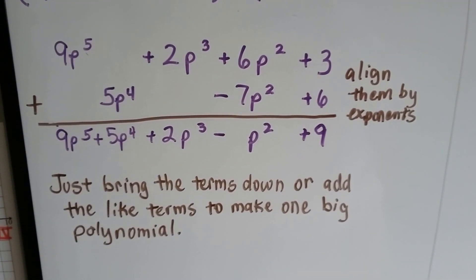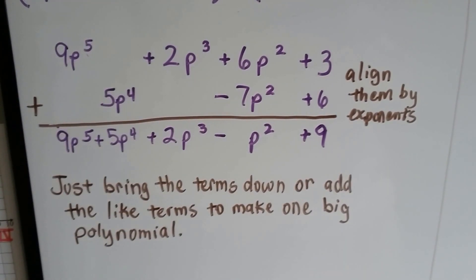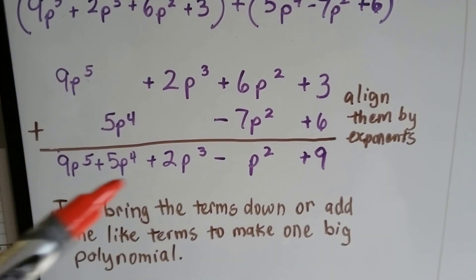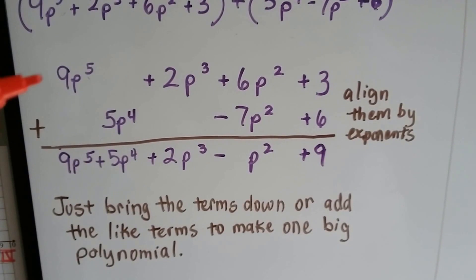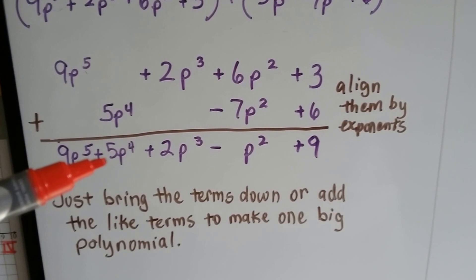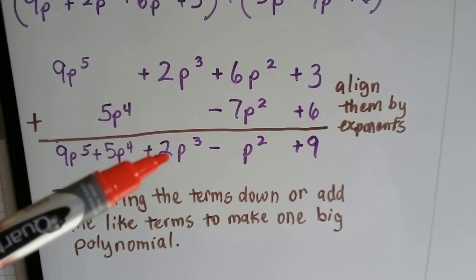Then we just bring down the terms or add the like terms to make one big polynomial. So these two polynomials end up becoming this one big polynomial. We bring the 9p to the fifth power down. We bring the 5p to the fourth power down, the 2p to the third.